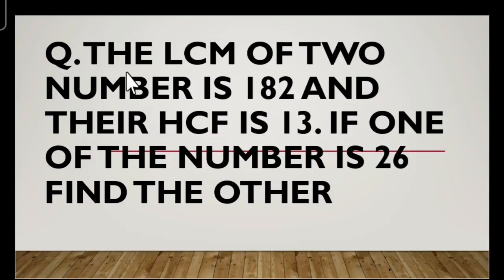Hi everyone. The given question is: the LCM of two numbers is 182. Let the numbers be a and b. Their LCM is 182 and their HCF is 13. If one of the numbers is 26, we have to find the other number.